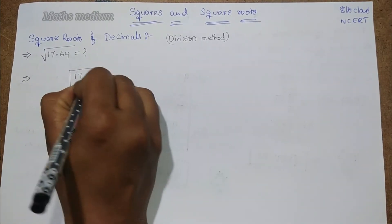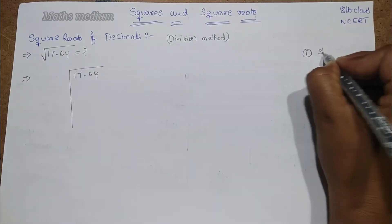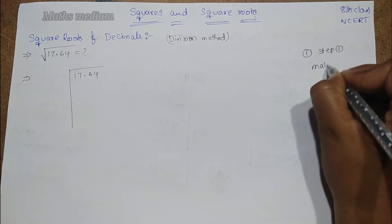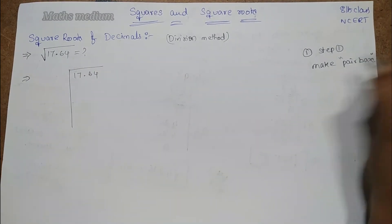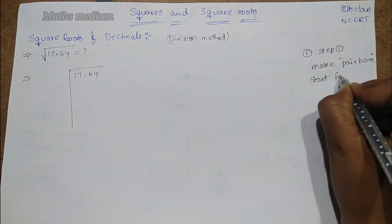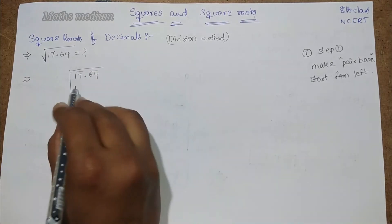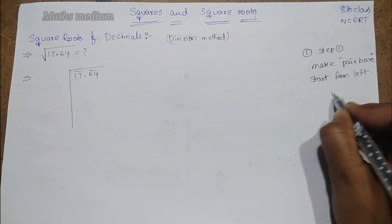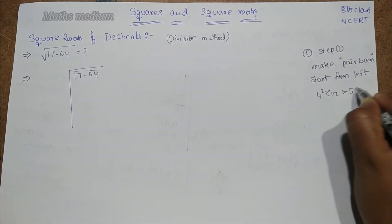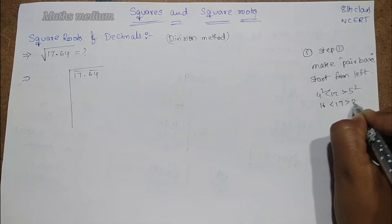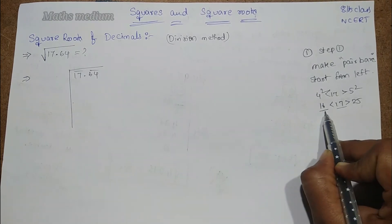So, 17.64. Now, as usual, take step 1 as make pair bars and start from left. Here, make pairs. First, start with 17. The number is 17. But, in between this, see, 4 square, 5 square. 16, 17, 25. It is less than 25. It is greater than 16. So, here, 16 is eligible for the division.